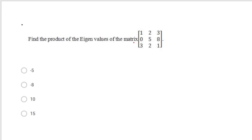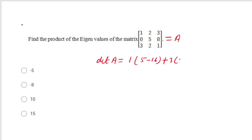Find the product of eigenvalues of the given matrix. The product of eigenvalues equals det(A). Expanding about the first column: 1·(5·3 − 2·8) − 0 + 3·(2·3 − 5·1) = 1·(15−16) + 3·(6−5) = −1 + 3·1... let me recalculate: 1·(15−16) = −1, then +3·(2·8−5·3) = 3·(16−15)=3. So −1−0+3 = ... the determinant evaluates to −8. The correct option is −8.